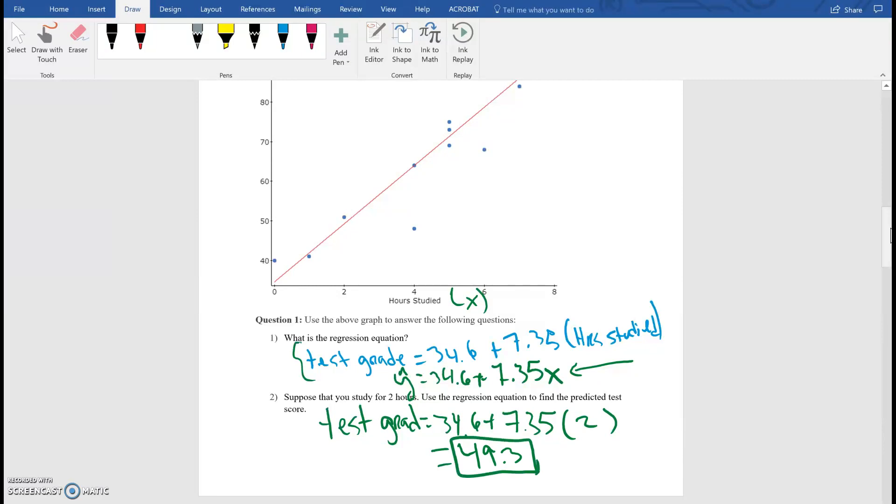So that is not a good grade. And also when you look at it here, for hours studied two, the point associated with that is going to be around 49.3, which is kind of close to 50. So you can see that there's a little bit of error. Okay, so now let's go to the next question.